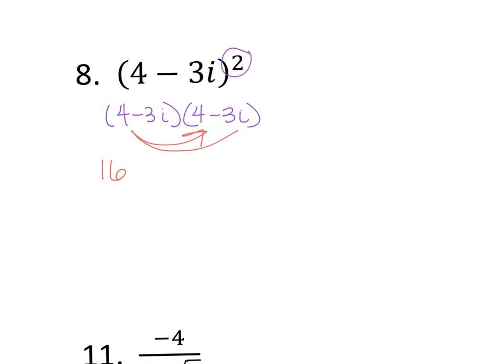Then you have your outside terms, which 4 times negative 3i. Don't forget that negative right there. Alright, 4 times negative 3i is a negative 12i. Then, since I'm done with that, I go on to negative 3i times 4, which is another negative 12i. And then I have a negative 3i times a negative 3i. Well, 2 negatives make a positive. 3 times 3 is 9. And i times i is i².